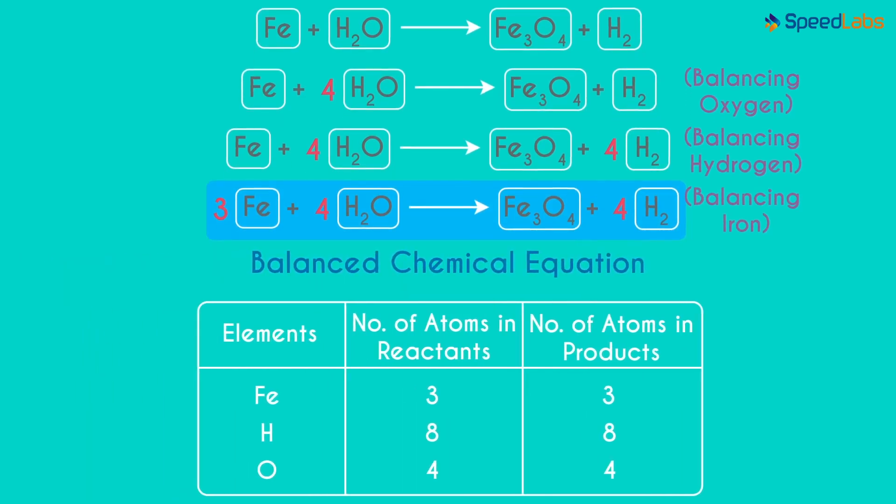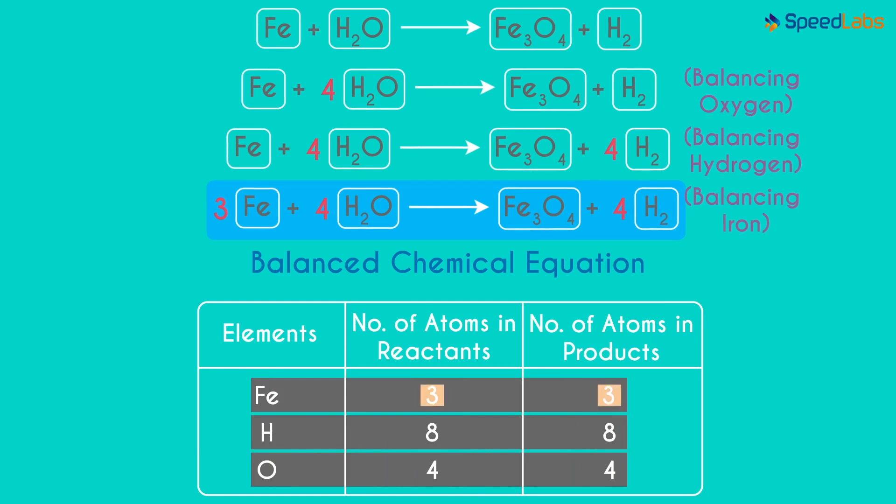The number of atoms of each element is equal on both sides of the equation. 3 of Iron on each side, 8 of Hydrogen on each side and 4 of Oxygen on each side.